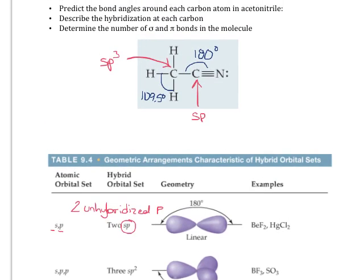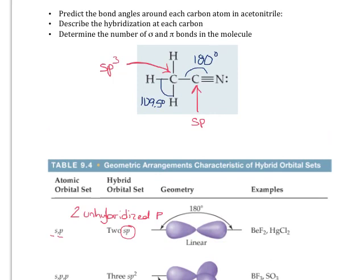So let's go ahead and answer the last question here, which is determining the number of sigma bonds and pi bonds. You should remember that a sigma bond is a single bond, and a pi bond is a multiple bond, so either a double or a triple bond.